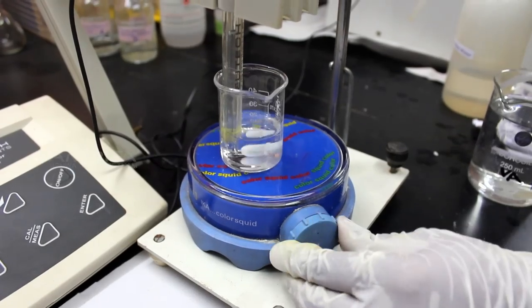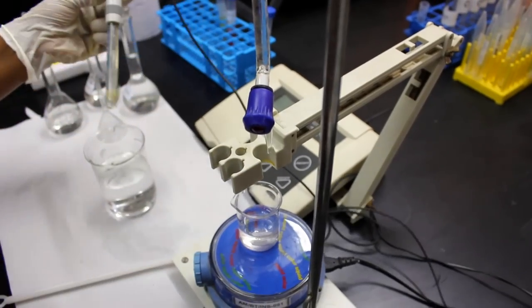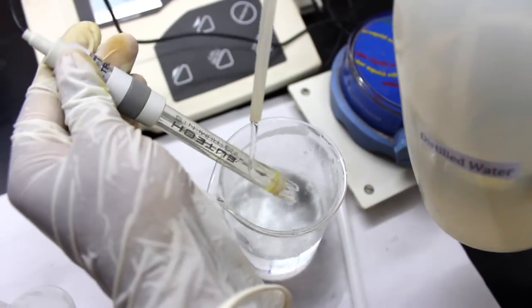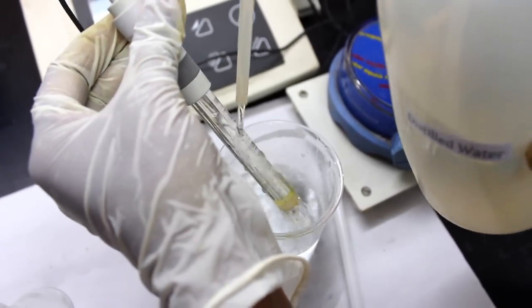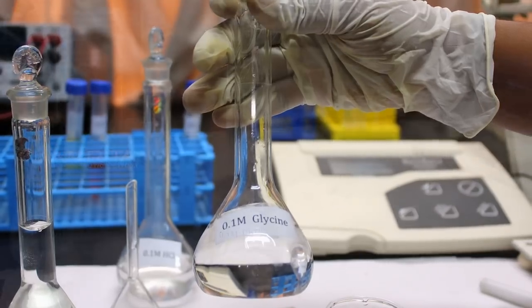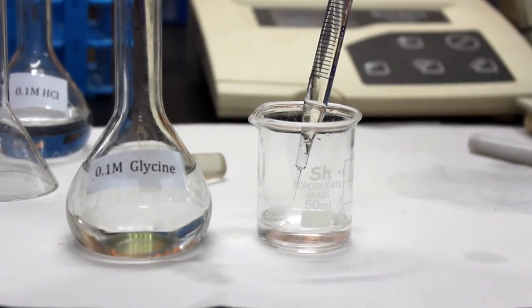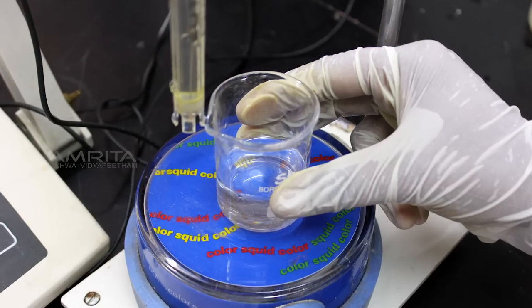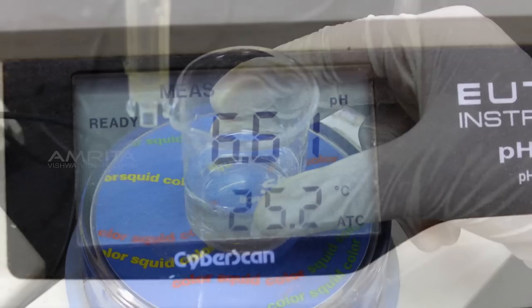Now stop the stirring and remove the electrode from the stand. It should be washed thoroughly with distilled water. Again transfer 20 ml of 0.1 molar glycine into a fresh 50 ml beaker and place it on top of the stirrer and record the pH.